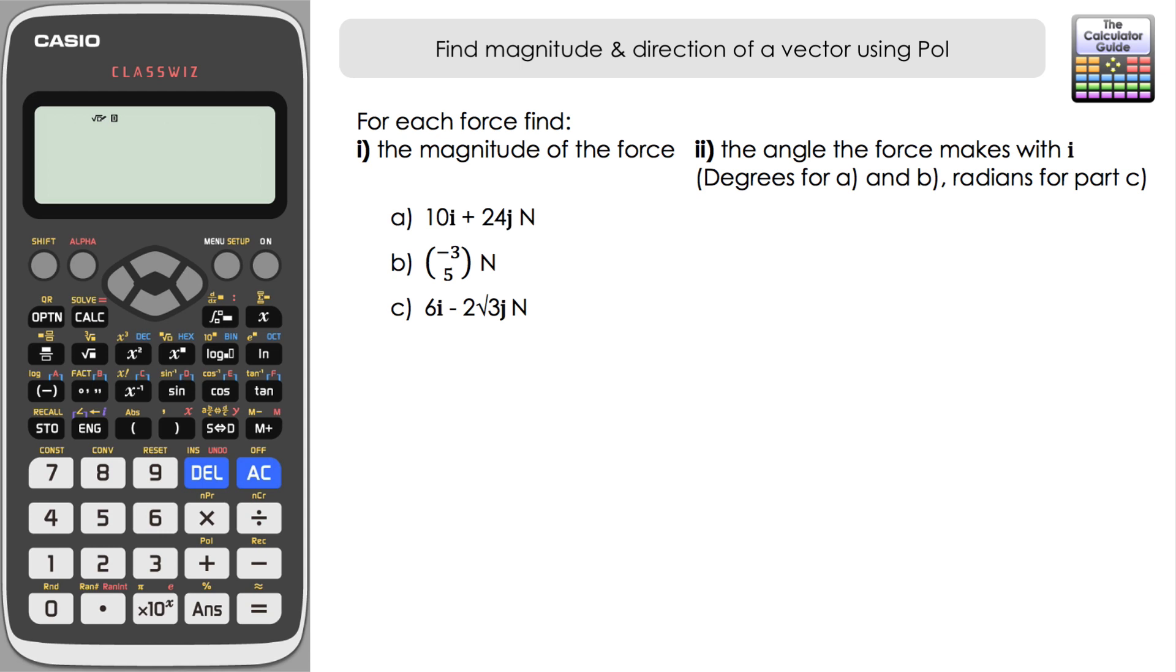For each force, so we've got three forces in vector form, for each force find the magnitude of the force and the angle that the force makes with i, i being the horizontal vector. We're going to give that angle in degrees for parts A and B and then in radians for part C.